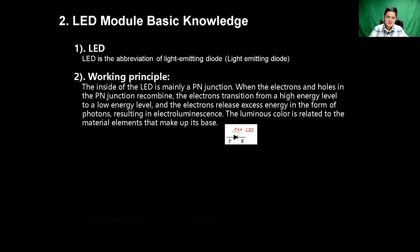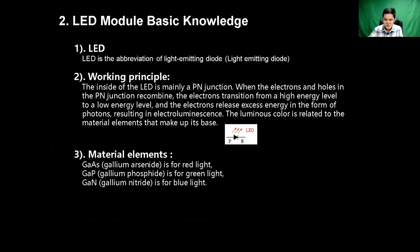The working principle is that inside the LED there is mainly a PN junction. When electrons and holes in the PN junction combine, electrons transition from a high energy level to a low energy level, and the electrons release excess energy in the form of photons, resulting in electroluminescence. The luminance color is related to the material elements that make up its base. There are three material elements for light color: GaAs for red, GaP for green, and GaN for blue.